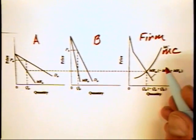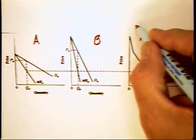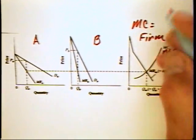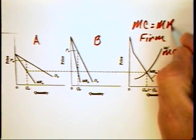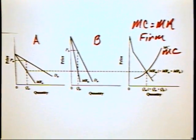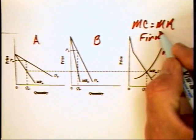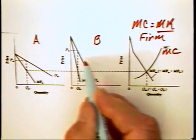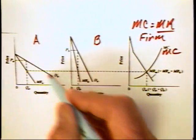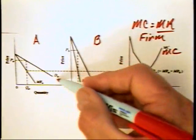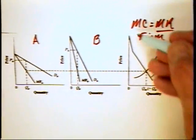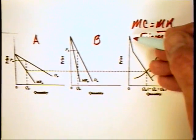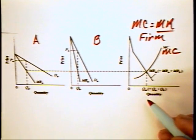How does the firm decide how much it's going to produce? As all firms will, it will produce where the marginal cost of the last unit is equal to the marginal revenue of the last unit. To get the marginal revenue curve, we can think in terms of horizontally summing the two demand curves — demand for market A and demand for market B — to get a combined demand curve, and then derive a marginal revenue curve from that.